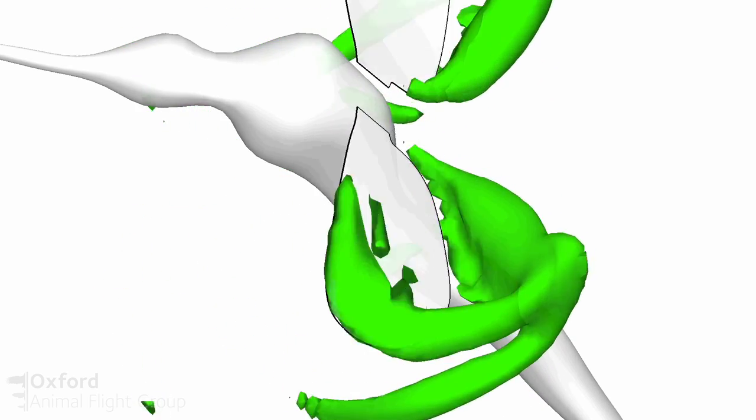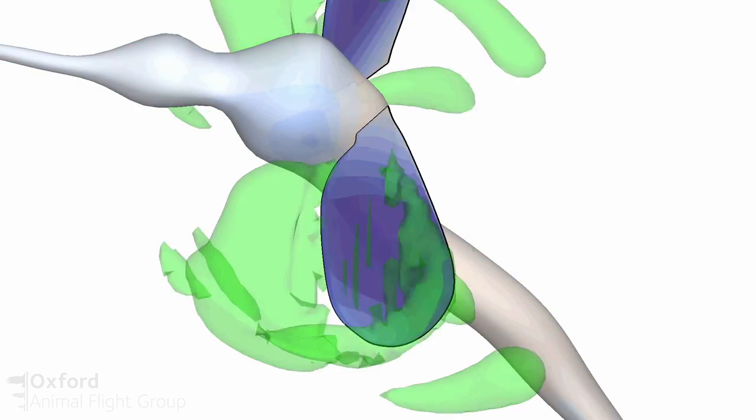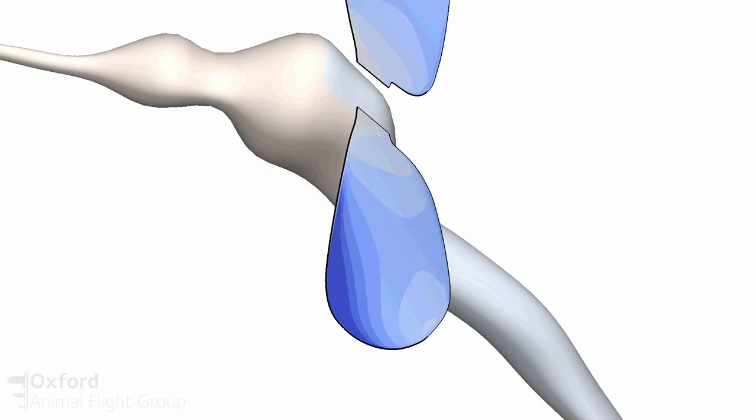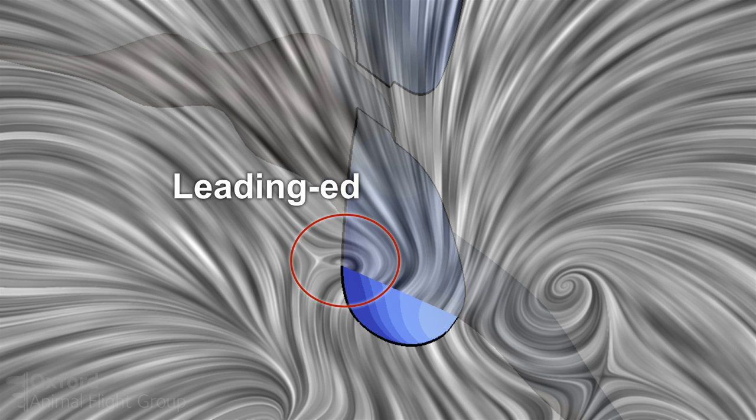So what we found was that mosquitoes are using three distinct aerodynamic mechanisms to support their weight. The first of these is something called a leading edge vortex, and this is something that's actually very well known within insects. If anything, it seems almost all insects use it. What we found in mosquitoes is that they have a much lower reliance on the leading edge vortex.